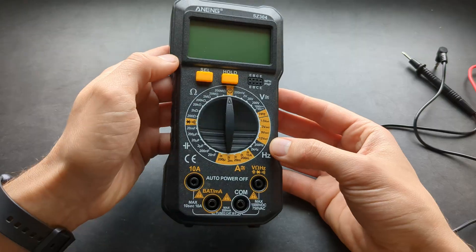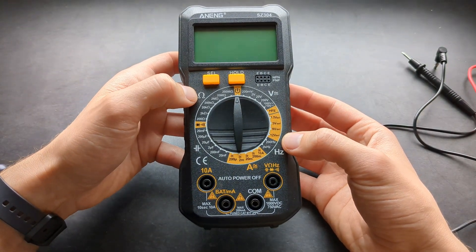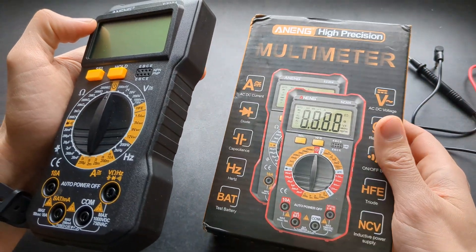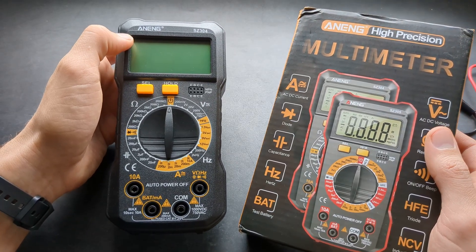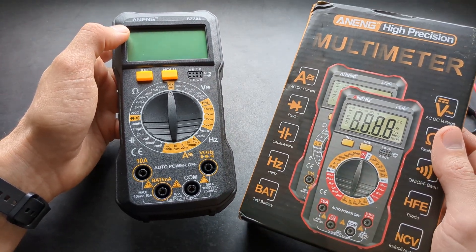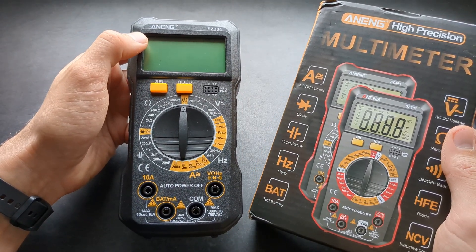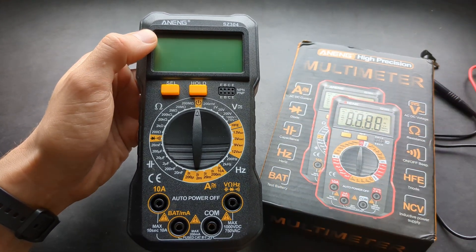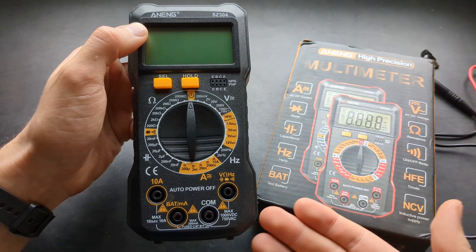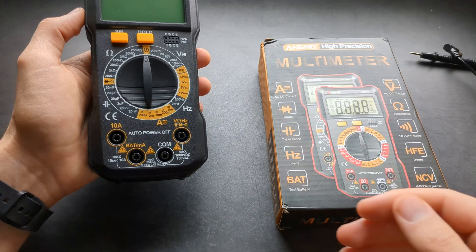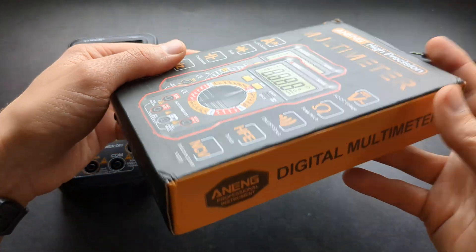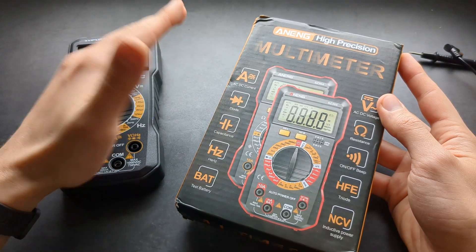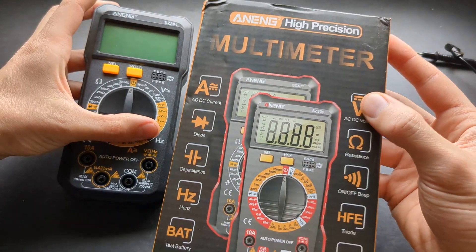For that price I don't think you can get a better multimeter. ANENG produces quite a lot of cheap multimeters and they have cheaper ones, however I wouldn't suggest those. The build quality on them isn't the best and you can't even test batteries on those. In their whole range, this 304 and 305 is the cheapest acceptable quality multimeter you should purchase.